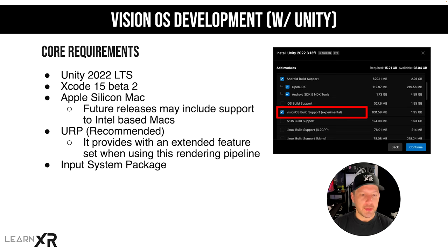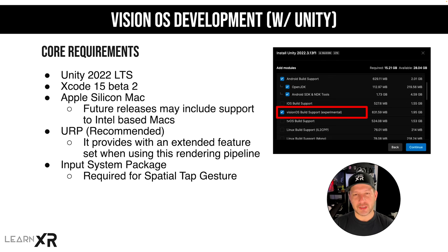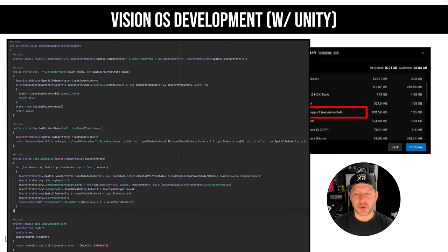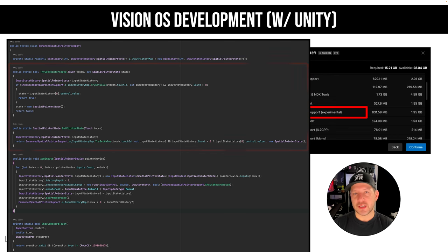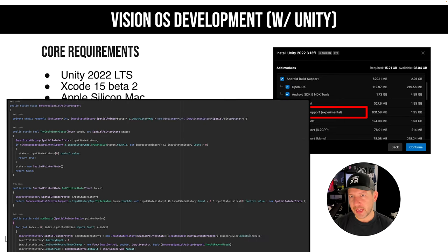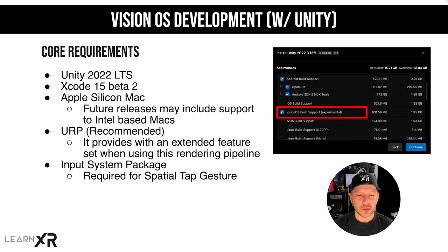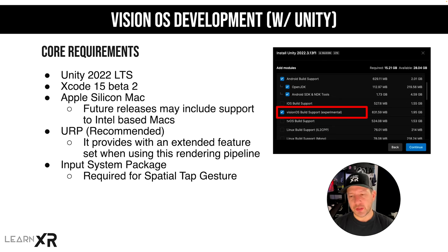The Input System package is also required, especially because the spatial tap gesture is going to be exposed through it. I'll show you the code Unity created for that. Basically it's going to allow you to use gaze and then pinch on the simulator — in the editor it's just a click, which on the device will translate to the native implementation of a spatial tap gesture. Just keep that in mind when you're upgrading or cutting a new project from scratch.